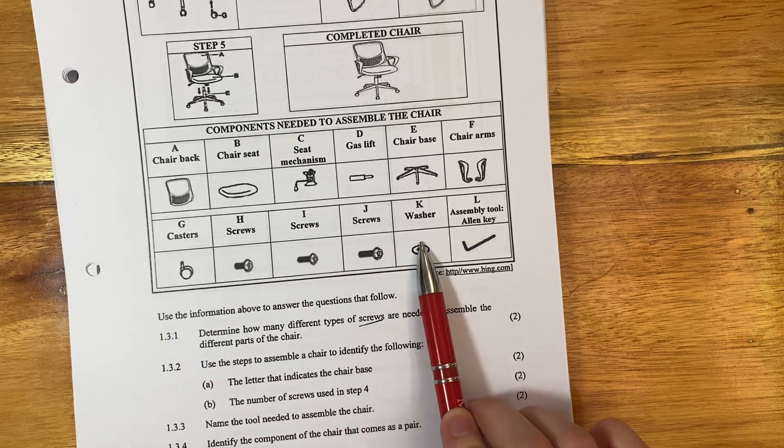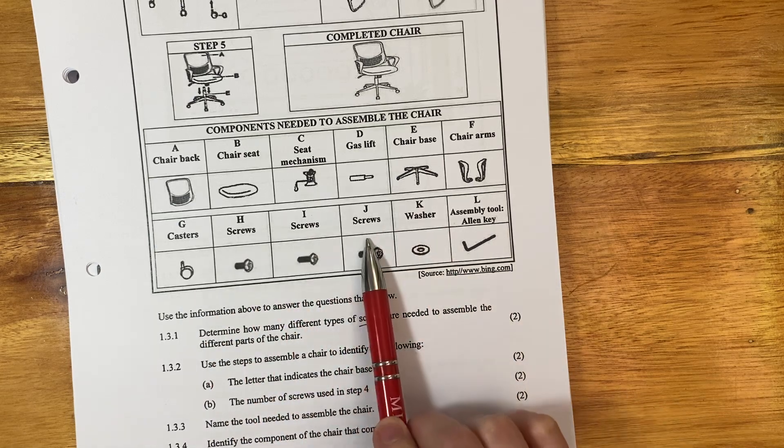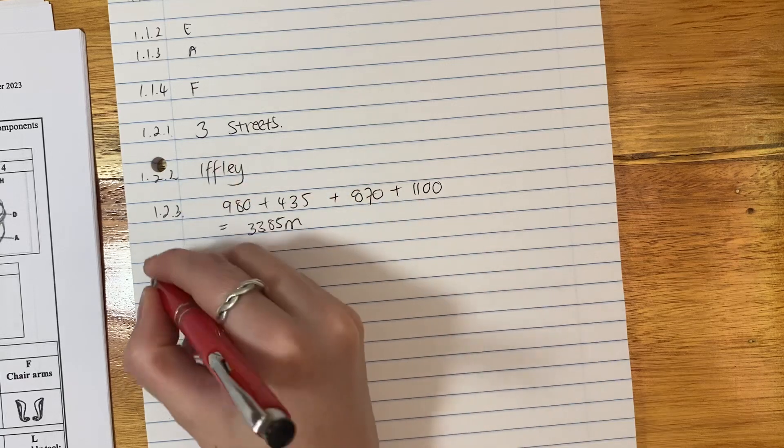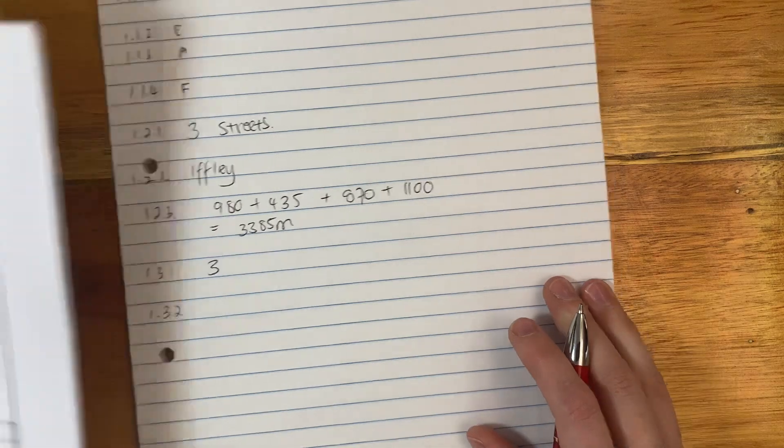Now be careful, this is not a screw, that is not a screw, this is not a screw. It says screws, right? So you literally just say 1.3.1 and you just say 3. How many different types? There's 3.